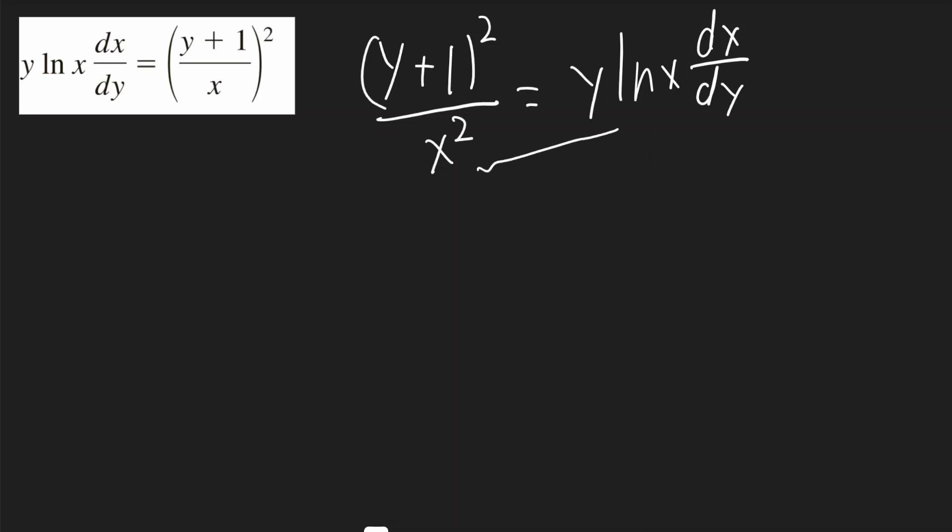So I'll move the x squared to that side, and I'll move the y to that side. I'll get y plus 1 squared over y is equal to x squared ln x.